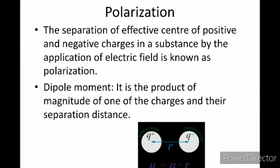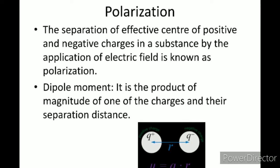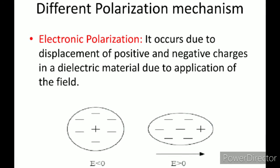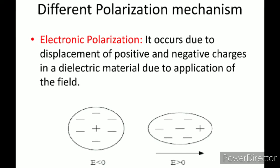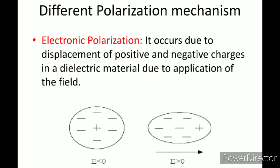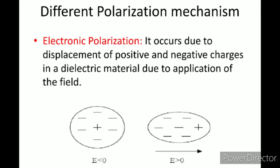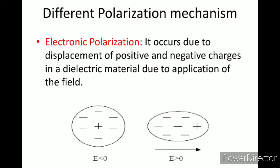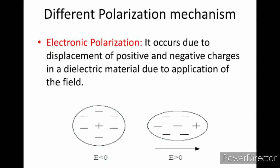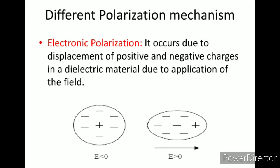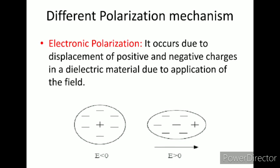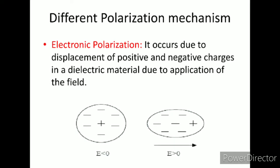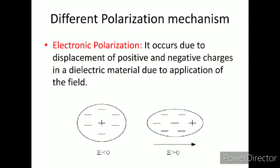There are different polarization mechanisms. The first is electronic polarization — it occurs due to displacement of positive and negative charges in a dielectric material due to application of the field. In the figure, without electric field the positive charge is at the center surrounded by negative charges, but when you apply the electric field, the negative and positive charges get slightly separated. This is called electronic polarization.